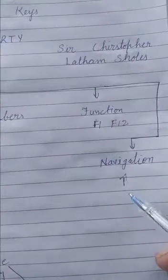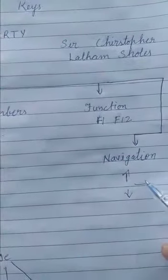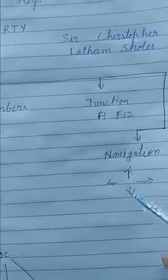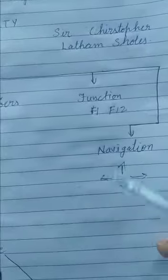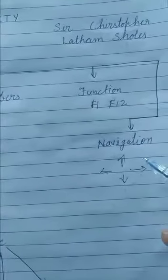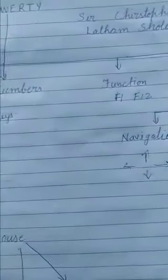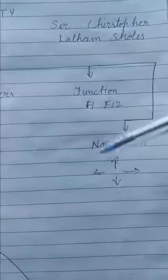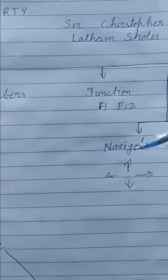So these navigation keys are like four arrow keys. At the bottom you must have observed there are four types of keys like this. Up, down, left and right. So these arrow keys along with that home and page up, page down. These all certain kind of keys are known as navigation keys.